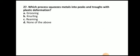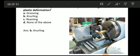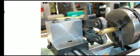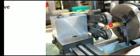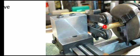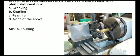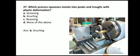Next question: which process squeezes the metal into the peaks and troughs with plastic deformation? The answer is knurling. Here you can see the knurling operation — whenever we want to produce some pattern on the workpiece, we use knurling tools. With the knurling tool we carry out the knurling operation, in which metal gets squeezed into the peaks and troughs with plastic deformation.